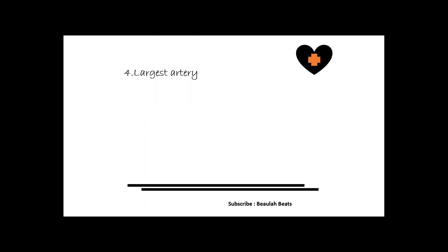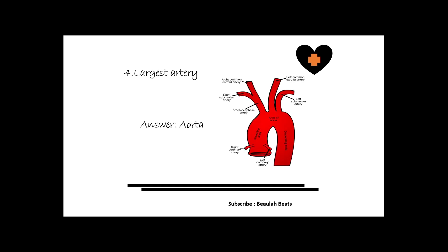The fourth question is: what is the largest artery in the human body? This artery originates from the left ventricle of the heart and extends down to the abdomen, then splits into two smaller arteries — the common iliac arteries. The correct answer is the aorta. The aorta is the largest artery in the human body.